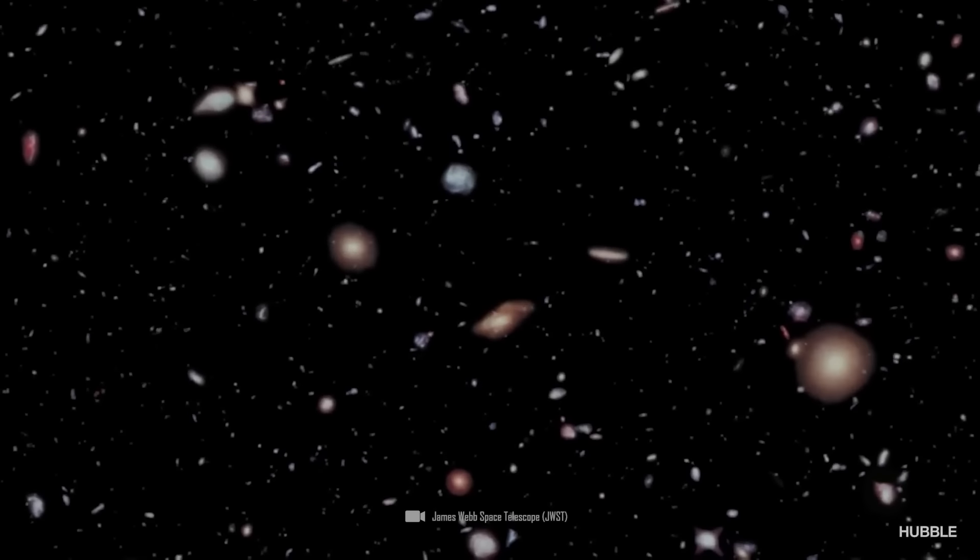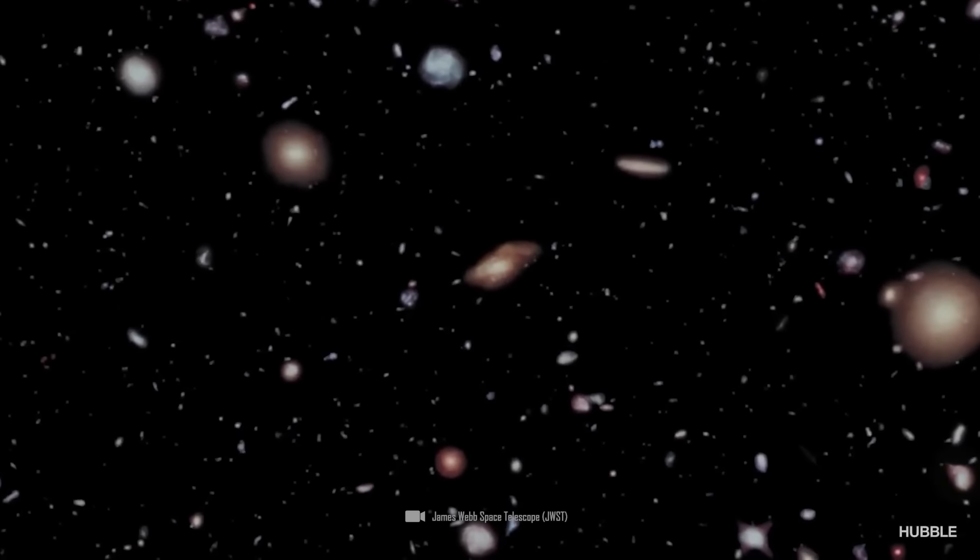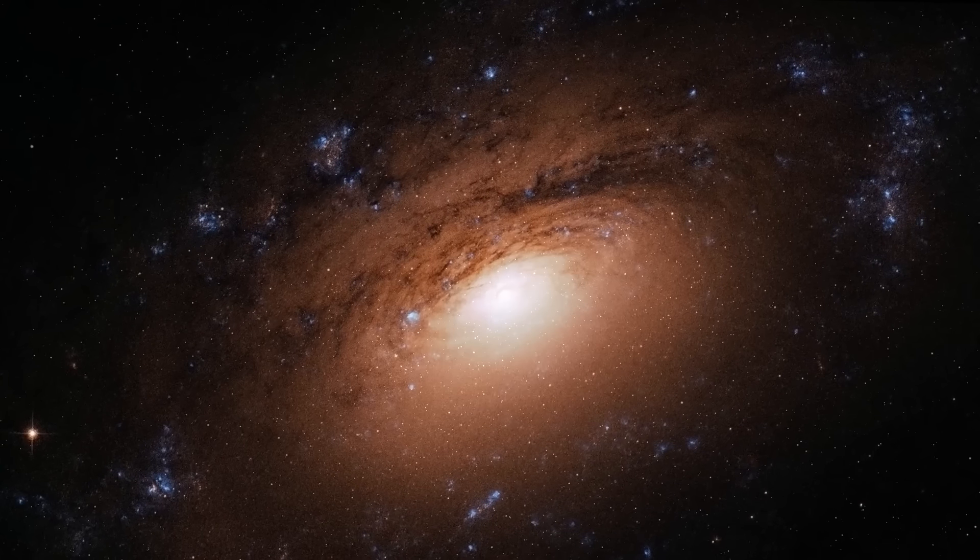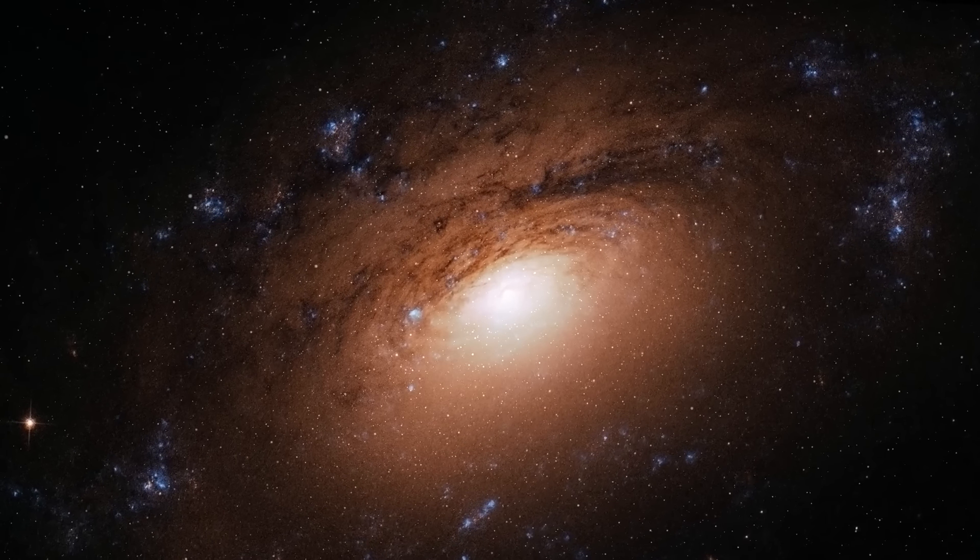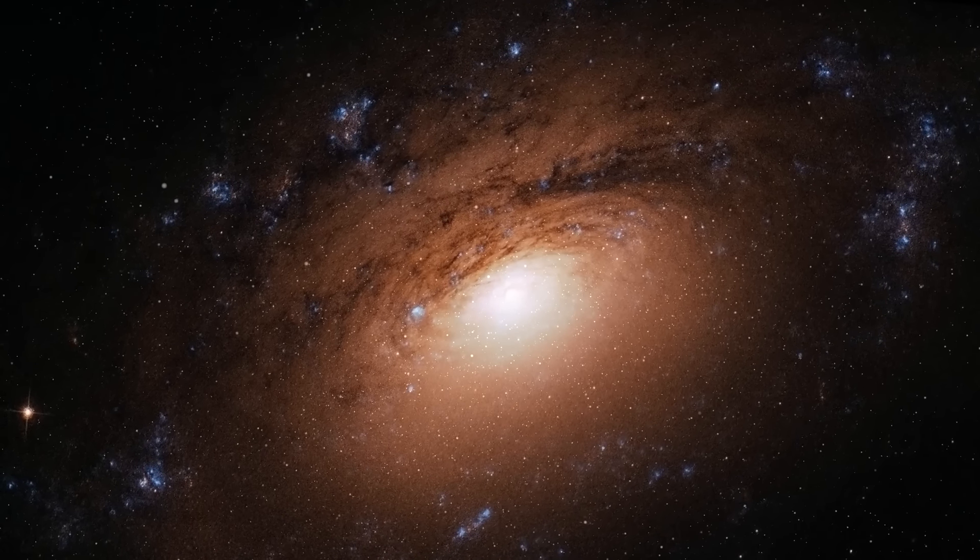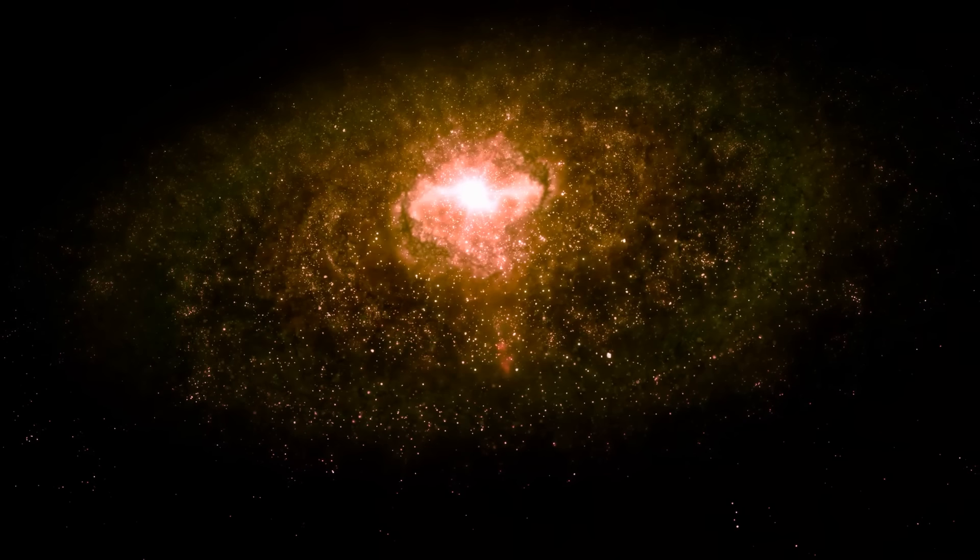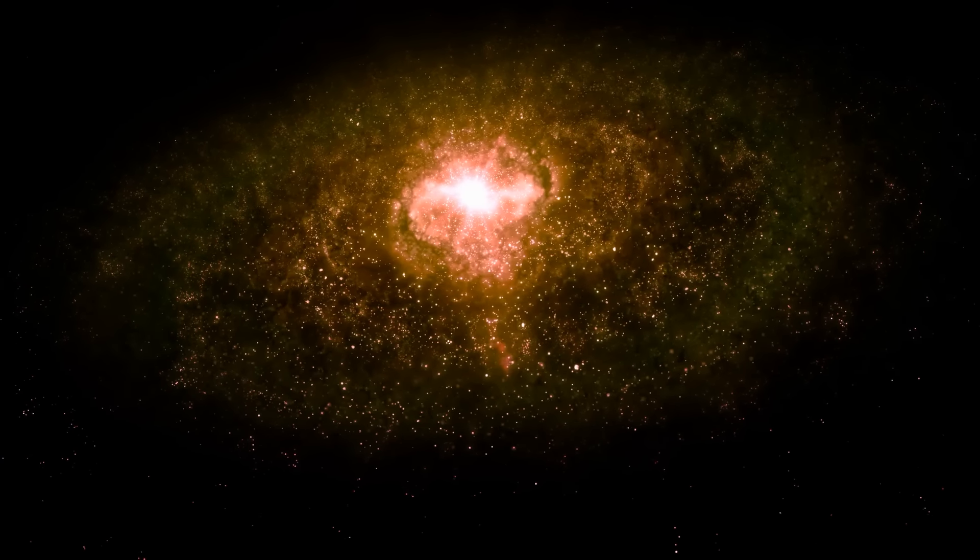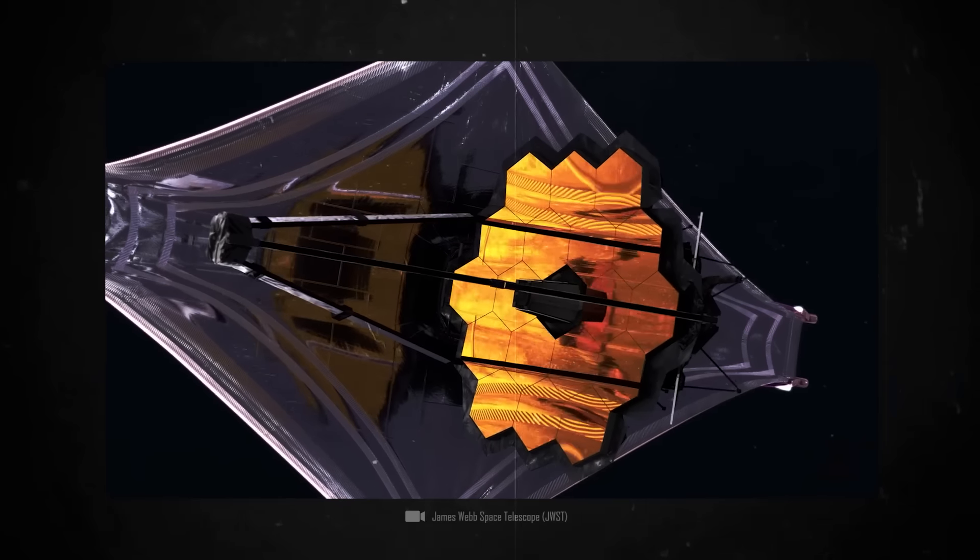James Webb can tell from these blurred spots of light when the light was emitted, where it came from, which stars emitted it, how massive the galaxy was, and which elements were predominantly in it. For the first time, experts now have complete analyses of very old galaxies in their hands.